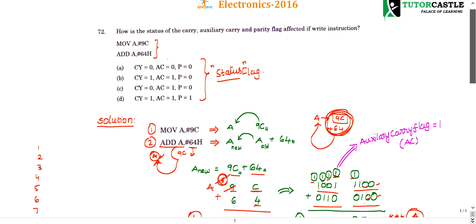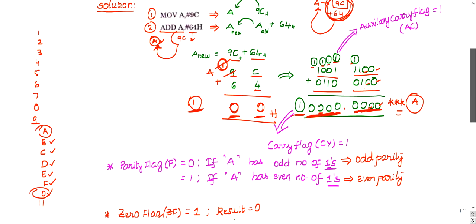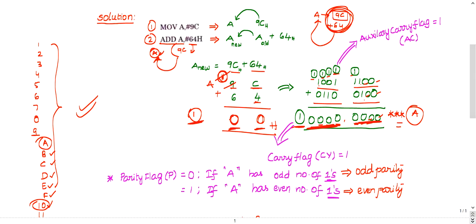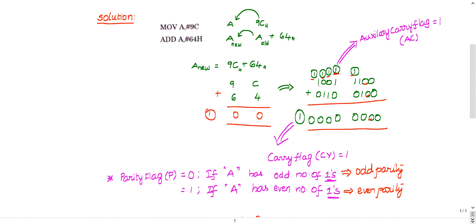Binary addition is useful here because we need to know the status of the flags. The carry flag is set to 1 when there is a carry out from the MSB — when an overflow occurs. In this case, a carry has come out from the MSB, so the carry flag (CY) is set to 1.